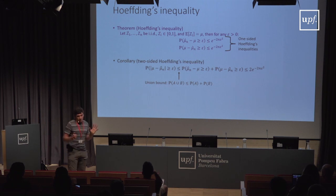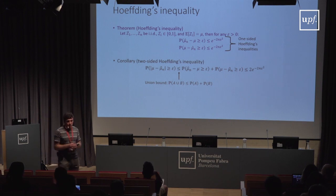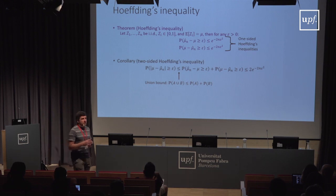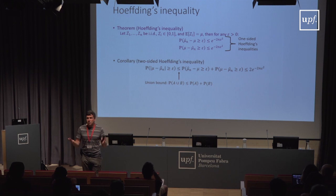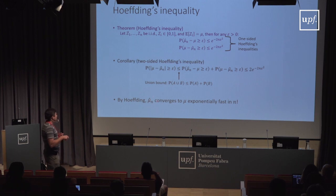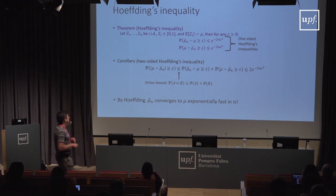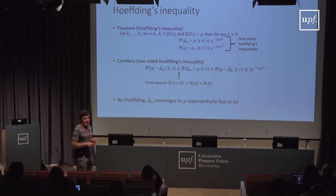You can generalize Hoeffding's inequality to any bounded random variable — you need boundedness, and the range of the random variable will appear in the inequality. Anything done for [0, 1] random variables can be extended to any bounded random variable by rescaling. By Hoeffding's inequality, the empirical mean converges to the true mean exponentially fast in n. The probability that it deviates by more than epsilon decreases exponentially fast as the number of samples n grows.